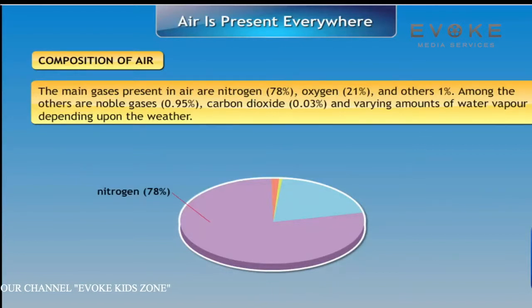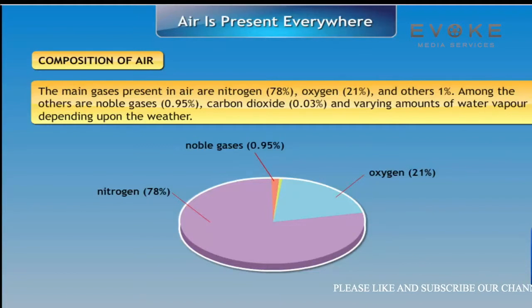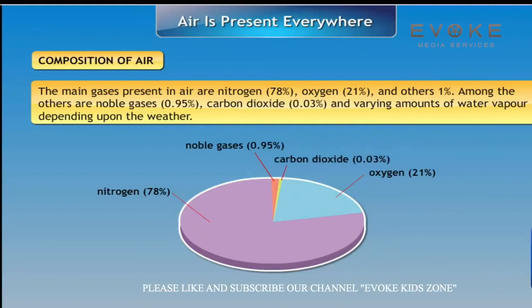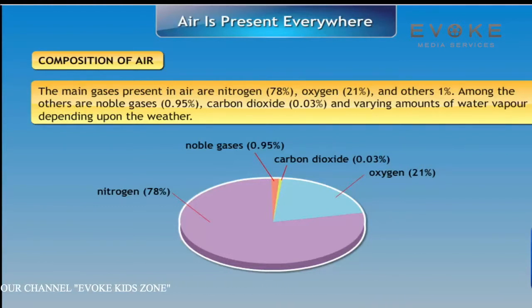are nitrogen at 78%, oxygen at 21%, and others at 1%. Among the others are noble gases at 0.95%, carbon dioxide at 0.03%, and varying